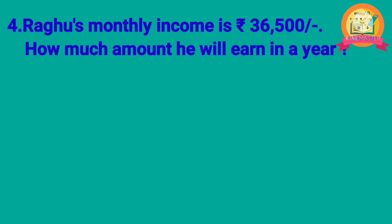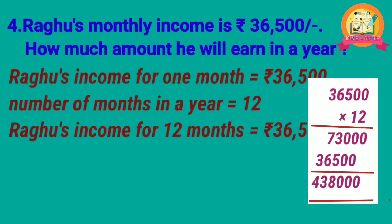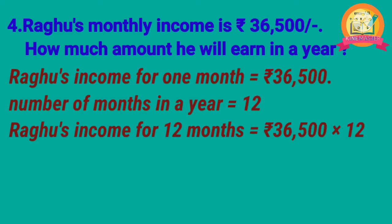The monthly income of Ragu was given and we have to calculate the amount he earned in a year. Solution: Ragu's income for 1 month is 36,500 rupees. Number of months in a year is 12. To get income for 12 months, multiply 36,500 with 12: we get 4,38,000. Therefore, Ragu's income for 12 months is equal to Rs. 4,38,000.